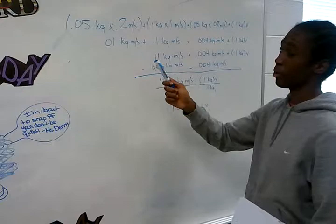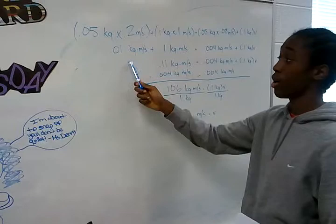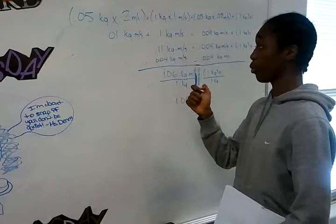We already plugged in our known. So as we saw the problem: 0.05 kilograms times 0.2 meters per second equals 0.01 kilograms meters per second plus 0.1 kilograms meters per second.